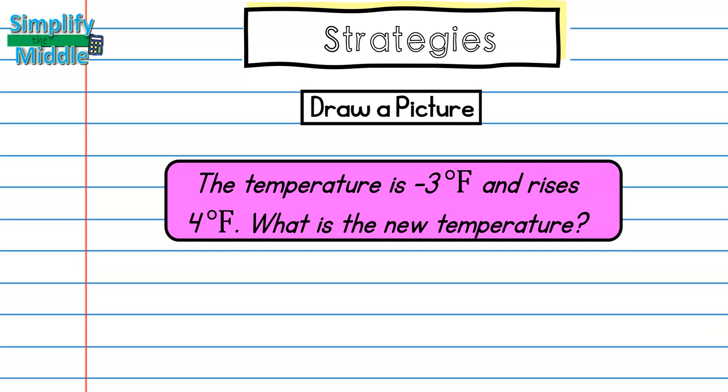So for drawing a picture I'm going to represent red and yellow tiles as my positive and negative integers. Here I have my three red tiles showing my negative three degrees, and because my temperature is rising four degrees I'm going to add four yellow tiles. Then to solve this problem I could just cross out my zero pairs and quickly find my answer. Drawing a picture made this word problem much easier to work with.